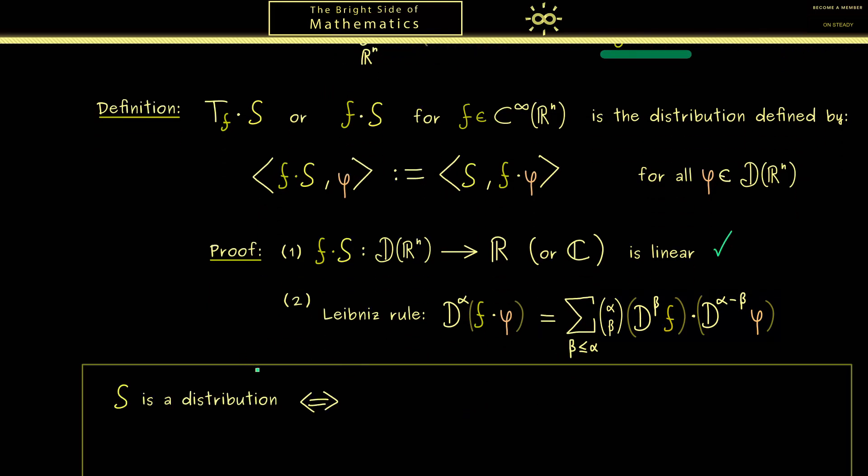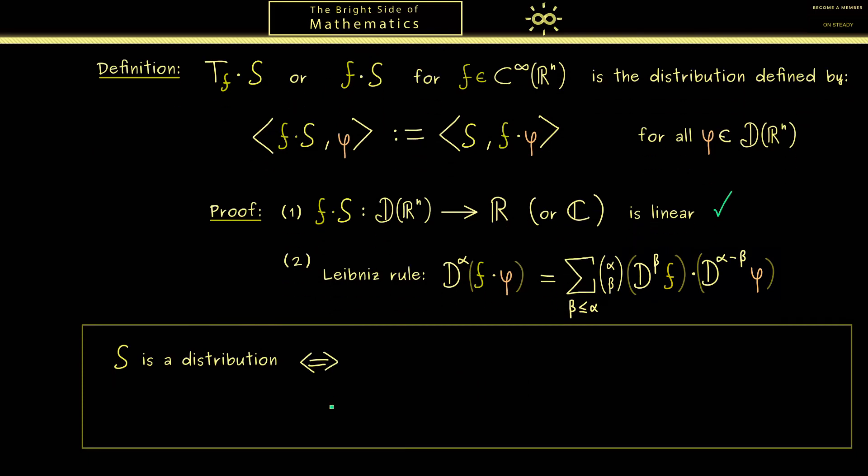And maybe a short recap here is appropriate. So let's formulate the whole thing for the distribution S. It tells us a linear map is a distribution if and only if for each compact set we find an index m and a constant c such that for all test functions that have support in this compact set we have the following inequality. And now you should see we also want to show this inequality for our new linear map f times S. And obviously we want to use that we already know that S is a distribution.